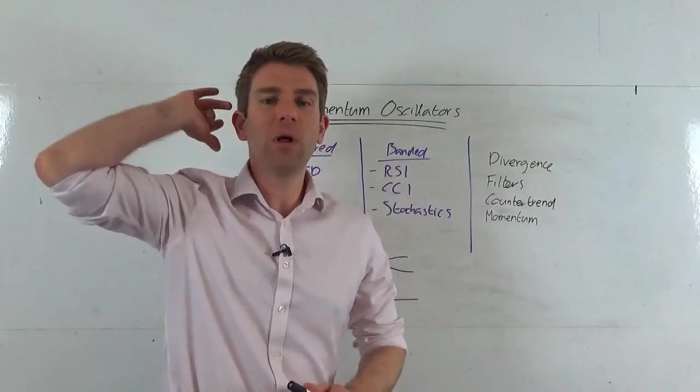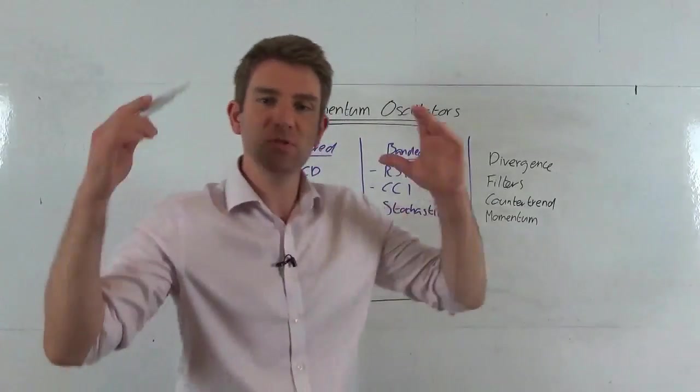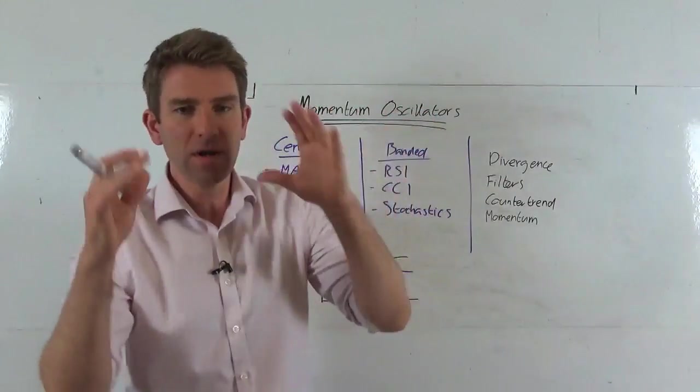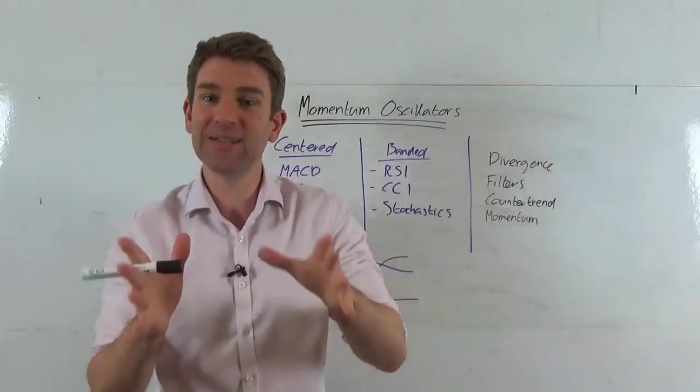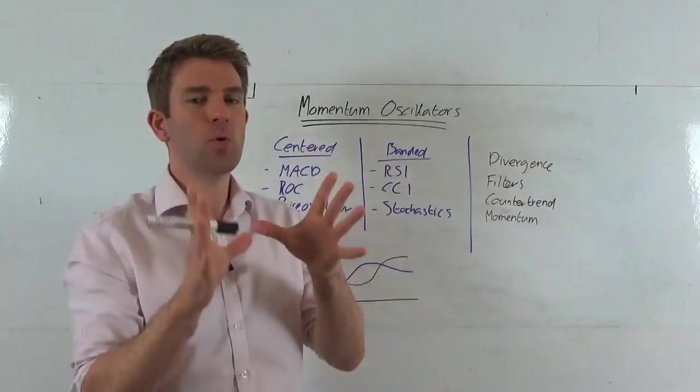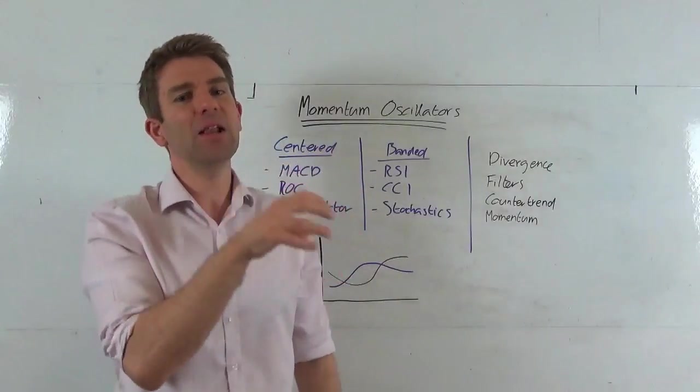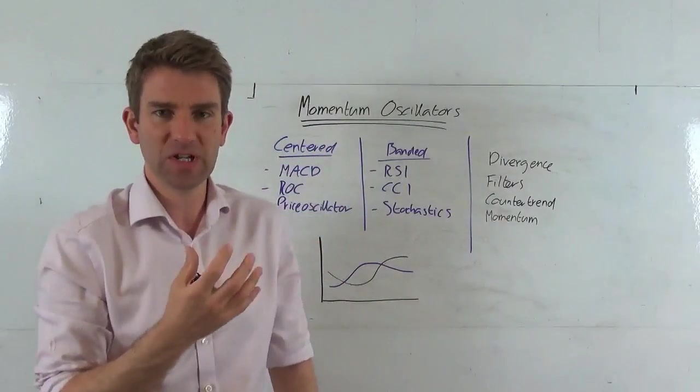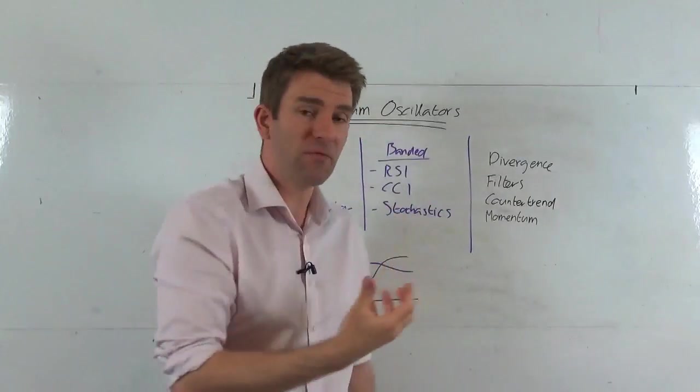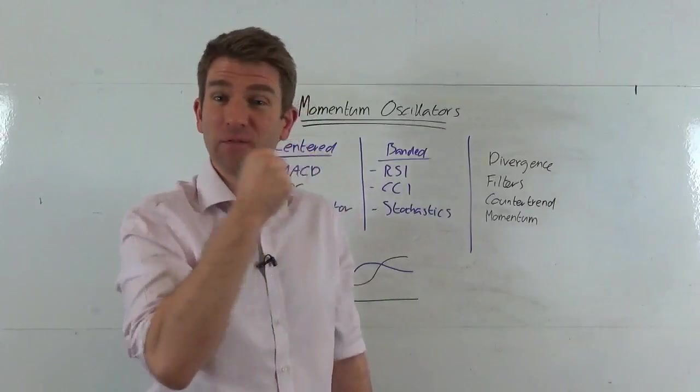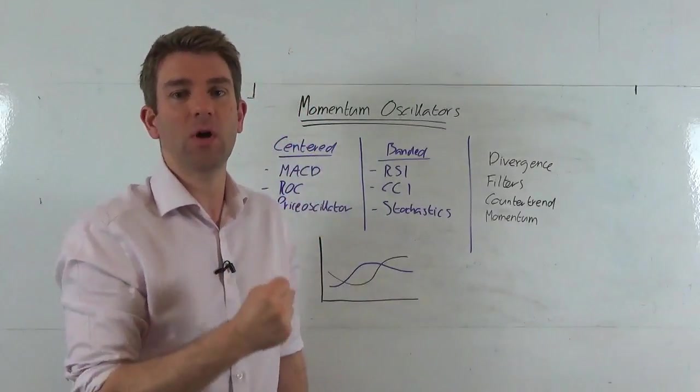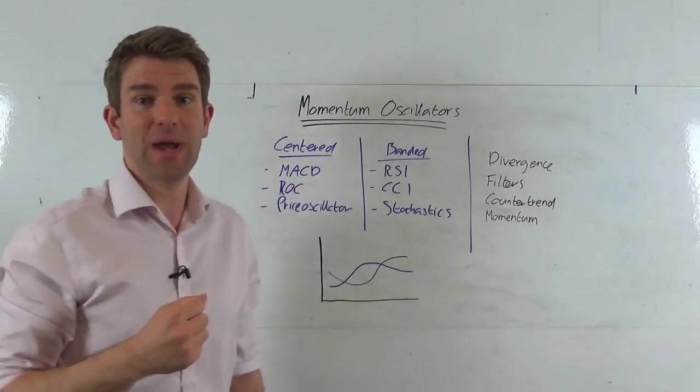Momentum oscillators are one type of indicator we can use to identify momentum. But that's quite broad. I want to drill down a little bit further into the types of oscillators we've got, some examples of them, how we can use them, and really when we are best to avoid them and when they really might work with a specific trading strategy.